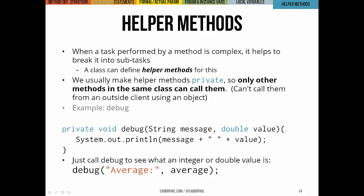That's when we'd want to use a helper method. And we usually make helper methods private, because that means that only other methods in the same class can call that method. No outside client can call it.